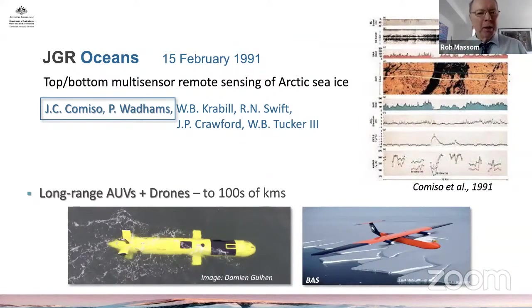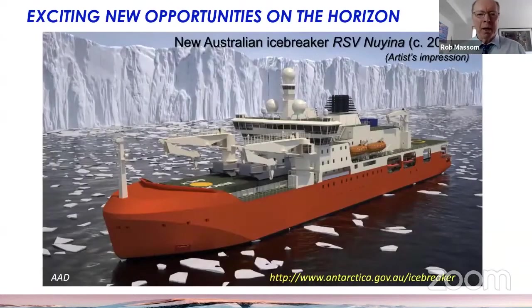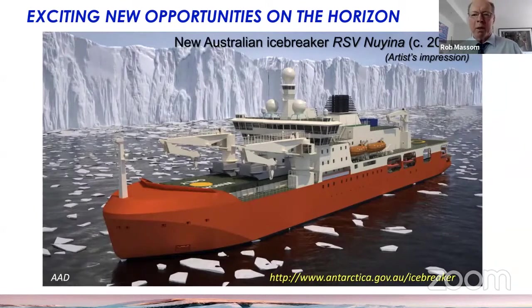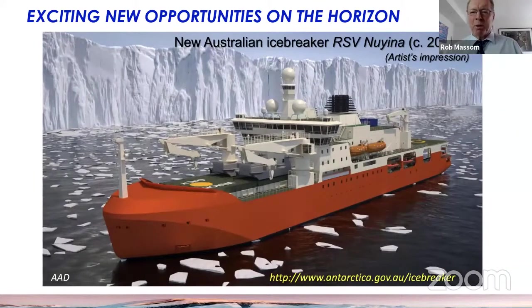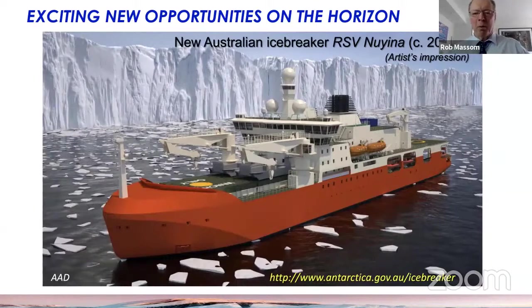Coming up to the end, there are exciting new opportunities on the horizon. I'm showing an artist's impression of the new Australian icebreaker, the RSV Nuyina — an Aboriginal Tasmanian word for Aurora Australis. As we speak, it was built in Europe and is on its way down to Australia, where it will open up a new era of being able to measure sea ice around Antarctica.